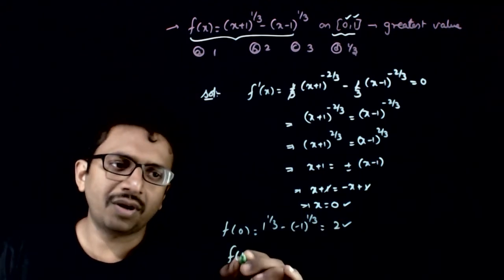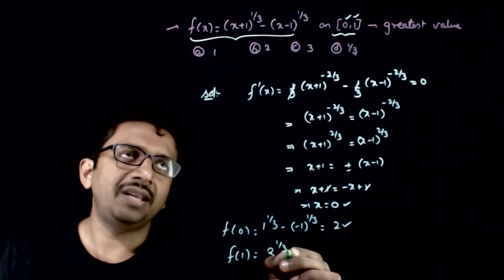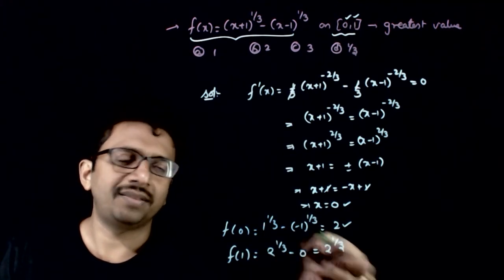And what is f of 1? f of 1 is nothing but 2 power 1 by 3 minus of 0, that is equal to 2 power 1 by 3.